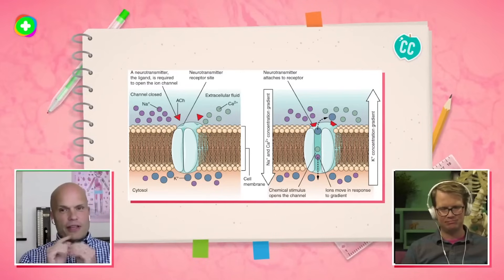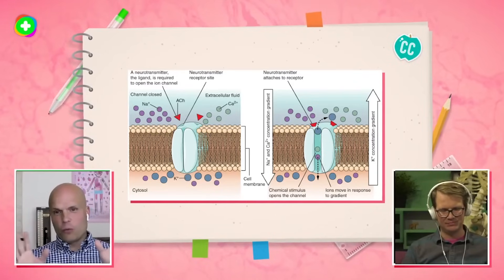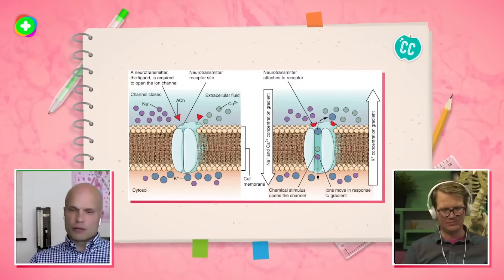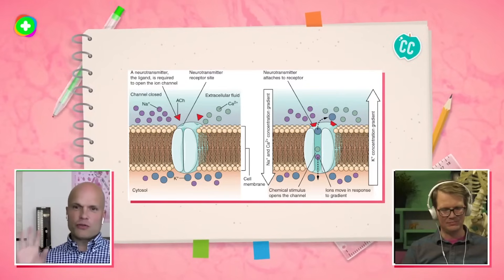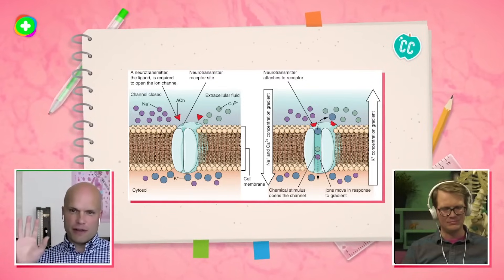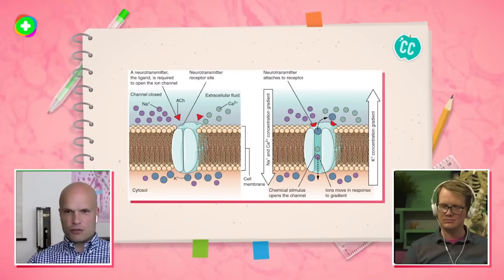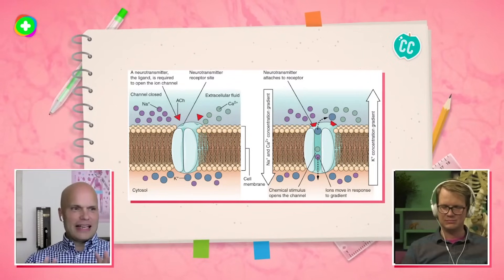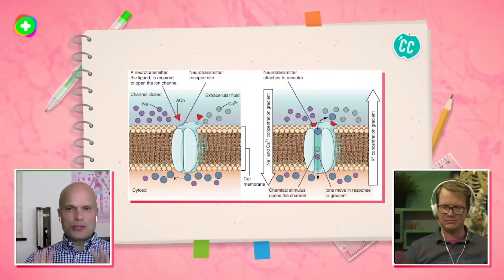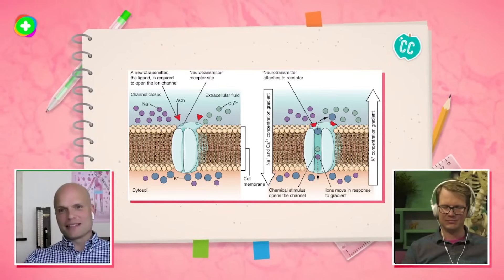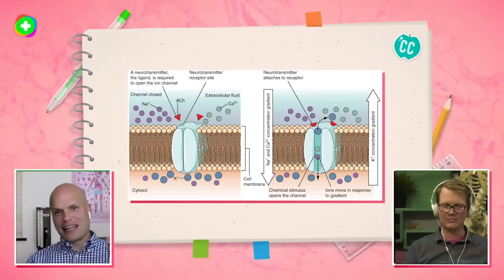Both sodium and potassium are positive ions. When dissolved in water, we call them solutes, and generally solutes want to move from areas of high concentration to areas of low concentration. Given the opportunity, sodium wants to come into the cell because it's outside, and potassium wants to get out of the cell because it's inside.